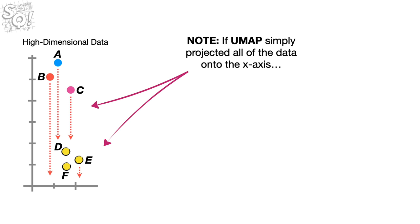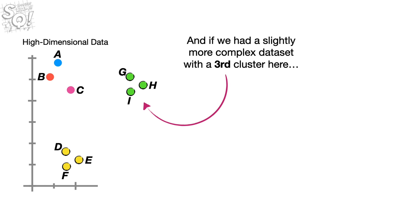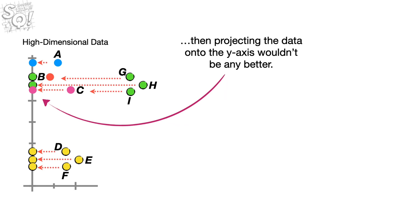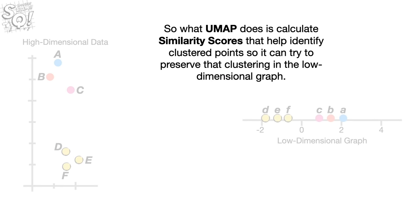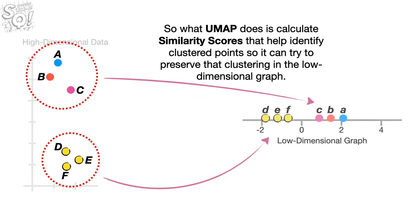Note: if UMAP simply projected all of the data onto the x-axis, instead of two distinct clusters we'd see a mishmash of points. And with a slightly more complex dataset with a third cluster, projecting the data onto the y-axis wouldn't be any better. So what UMAP does is calculate similarity scores to help identify clustered points so it can try to preserve that clustering in the low-dimensional graph.